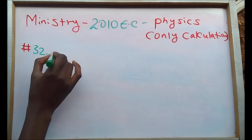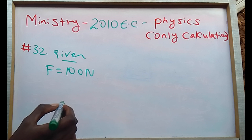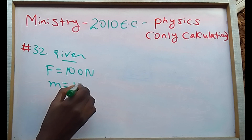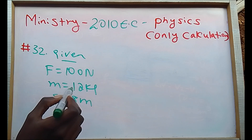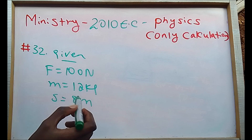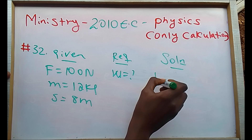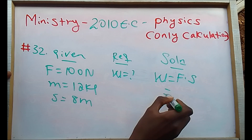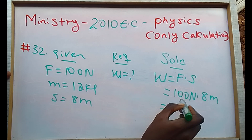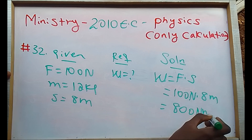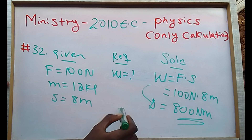A force of 100 Newton is exerted horizontally on a box of mass to displace it through a distance of 8 meters. How much work is done? Work equals force times distance. Force is 100 Newton, distance is 8 meters, so work equals 800 Newton meters. B is our answer.